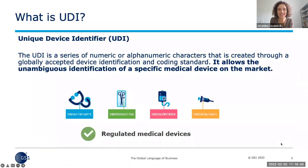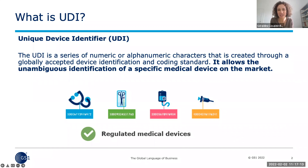So what is UDI? This unique device identification system is based on identifiers. It's made of different components, and the key one is a unique device identifier, which is a series of numeric or alphanumeric characters created in order to globally and uniquely identify medical devices. This system is based on internationally recognized standards for coding and identification.